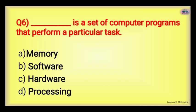Next: Dash is a set of computer programs that perform a particular task. This is a computer program made for a particular task. Options: Memory, Software, Hardware, or Processing. The right answer is Software.